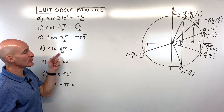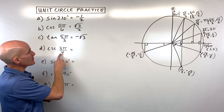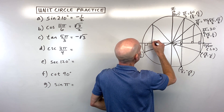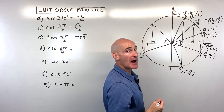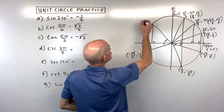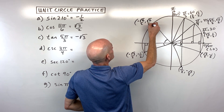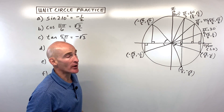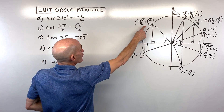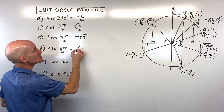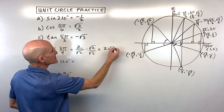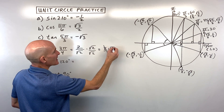Letter D: cosecant of 3π/4. This is 3/4 of π, landing in the second quadrant. The reference angle is 1/4 π (45 degrees). Coordinates are negative √2/2, √2/2 — x is negative, y is positive. Cosecant is the reciprocal of sine (the y-coordinate): 2/√2. Rationalize by multiplying top and bottom by √2: 2√2/2, and the 2s cancel — giving √2.